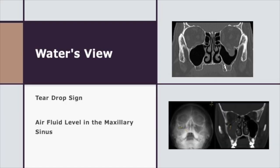As with any maxillofacial trauma, you would like to get a CT scan of the face. If that is not available, get a plain X-ray — what we call Waters view. If you look closely in these images, you will see a teardrop sign on the left side. That teardrop sign is due to entrapment of a muscle called the inferior rectus, or it may be due to blood seeping through the orbital floor following a fracture. In the image below, you will see an air-fluid level in the right maxillary sinus, also confirming a fracture of the orbital floor.